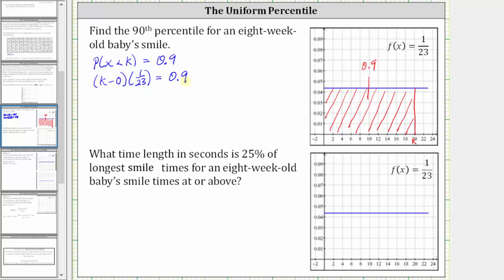To find the 90th percentile we simply solve for k. Distributing 1/23, we have (1/23)k minus 0 equals 0.9. To solve for k we multiply both sides by 23. Simplifying, k equals 0.9 times 23, which equals 20.7. So the 90th percentile is 20.7 seconds.